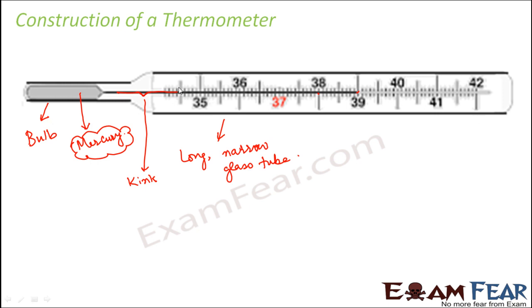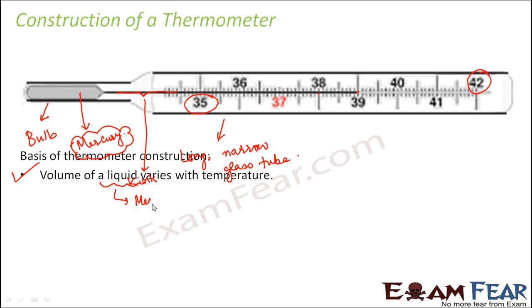And the scaling you have already seen, it starts from 35 and it is only up to 42 degree Celsius. So what is the basis of construction of a thermometer? The basis is that volume of a liquid varies with temperature. And which is the liquid that is being used here? The liquid is nothing but mercury. So as you heat the mercury, the mercury expands. And when the mercury expands, its level increases. It tends to go high up on the thermometer scale.